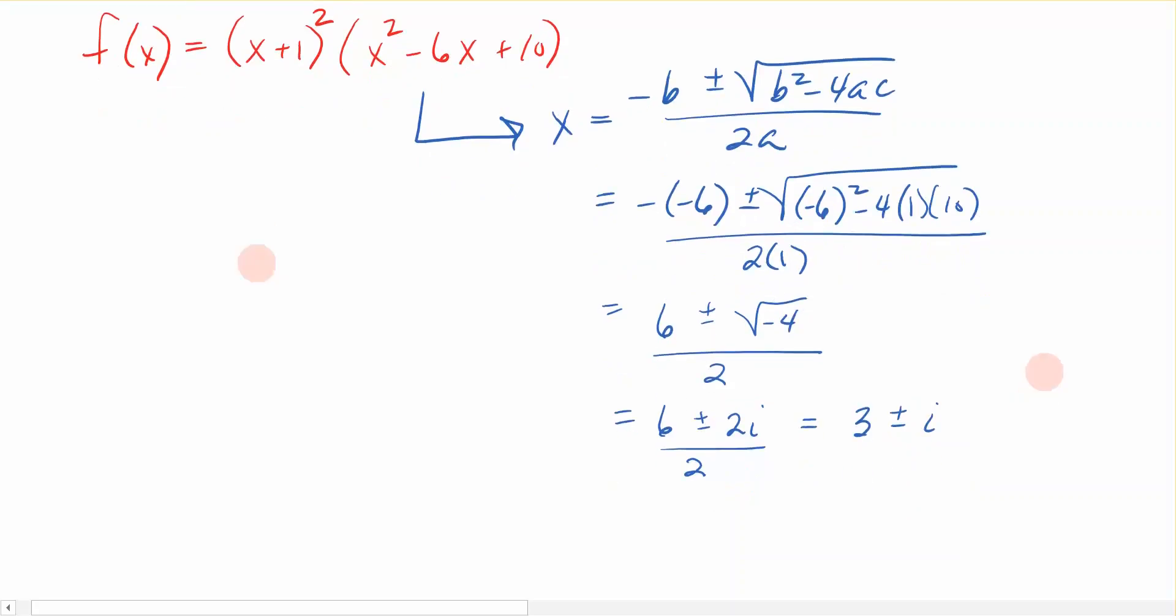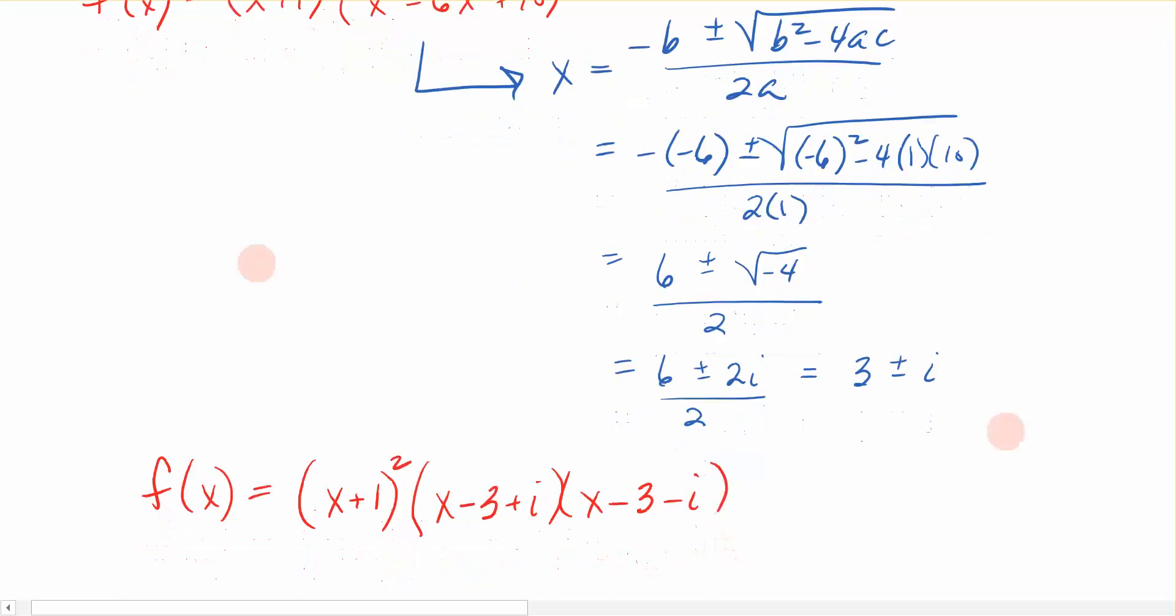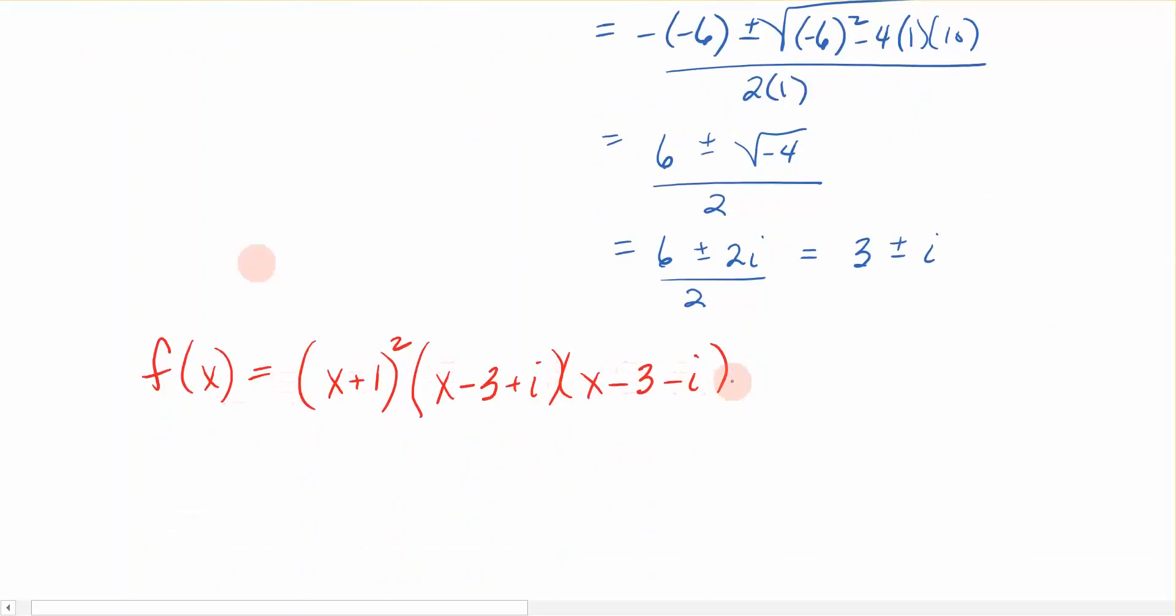So going back, I am now going to rewrite my polynomial in its factored form. I started it up here, but let's finish it down here. So I'm going to rewrite it now completely factored. Remember I had that repeated root we could see from the graph, x plus 1 squared because it was even, it touched. Now how do I write this in its factored form? It would look like x minus 3 plus i, x minus 3 minus i. And that is the factored polynomial for my function.